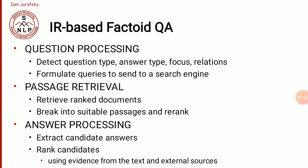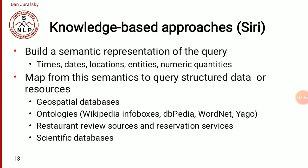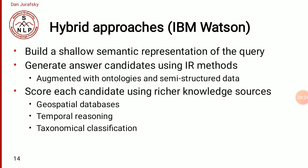In question processing, we detect question type, answer type, focus, and relation — four things — and then formulate the query to send to a search engine. In passage retrieval, we retrieve ranked documents and break them into suitable passages or re-rank them. In answer processing, we extract candidate answers and rank them using evidence from the text and external sources. In knowledge-based approaches — like Apple Siri — we build a semantic representation of the query: times, dates, locations, entities, numeric quantities. We then map from semantics to structured data resources such as geospatial databases, ontologies like Wikipedia, DBpedia, WordNet, Yago, restaurant review sources, and scientific databases.